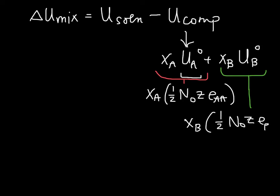This full derivation can be found in the textbook. The U of the solution comes from taking the number of AA, BB, and AB bonds. In the end, we get an expression for delta U mixing which looks like this.